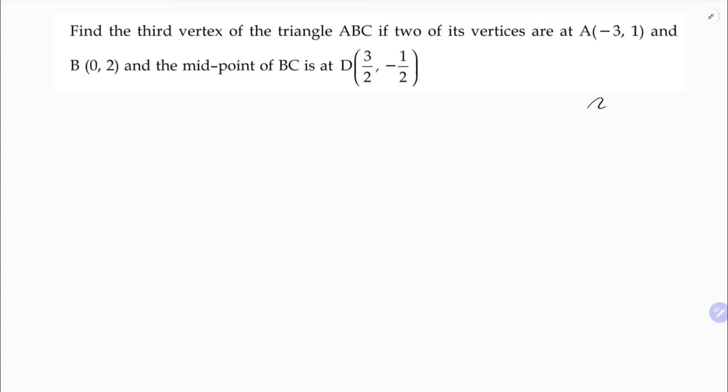Find the third vertex of a triangle ABC if two of its vertices A and B are given and the midpoint of BC is given.